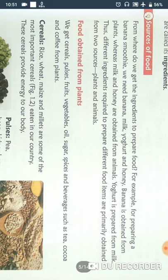Let's discuss plant sources one by one. From plants we get cereals, pulses, fruits, vegetables, oil, sugar, spices, and beverages such as tea, cocoa, and coffee. Beverages means what we get in drinking form, such as coffee.